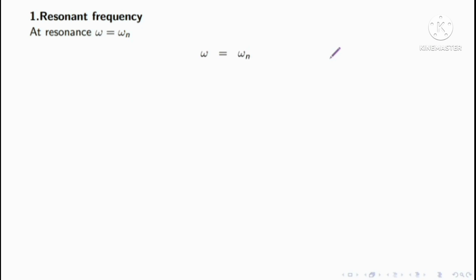Damping coefficient c value is equal to 45 Newton second per meter. Finding the resonant frequency: the resonant frequency equals the natural frequency omega n. Omega n is equal to root of k by m; substituting the given values gives 38.73 radian per second.